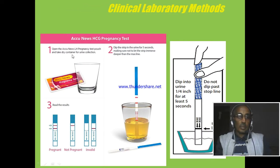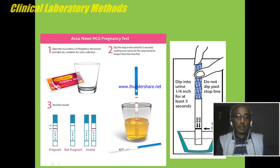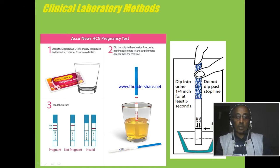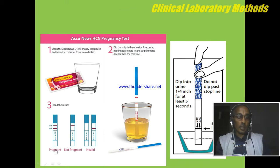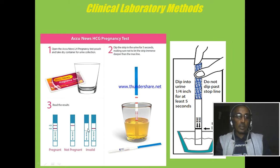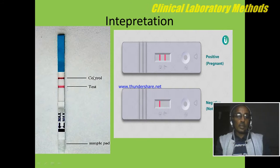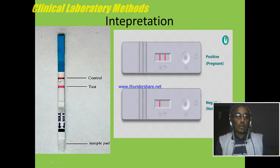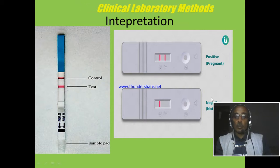This picture shows the procedure of the pregnancy test. We immerse the strip into the urine without touching the stop line, and then we interpret the result. If there are two lines, we report as positive for HCG. One line at the control side means negative for HCG. If there is no line at the control side, it is invalid. In summary: two lines — positive for HCG; one line at the control side — negative for HCG or no pregnancy.